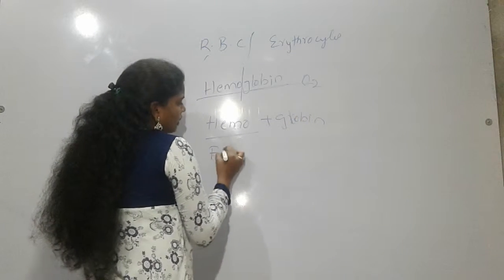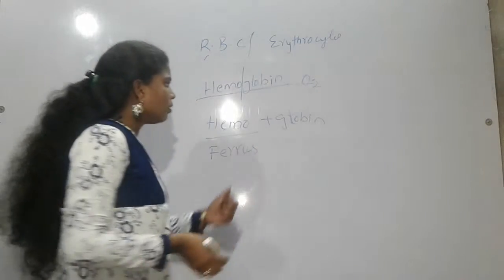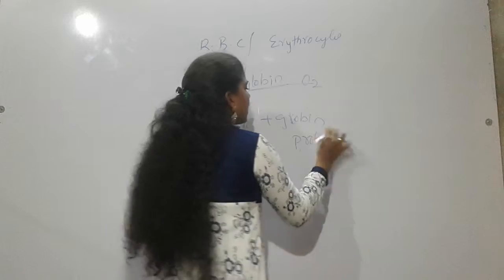What it means heme? Heme is ferrous and globin is a protein. Ferrous means it is iron.